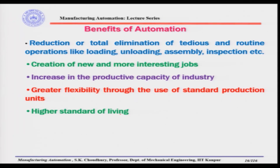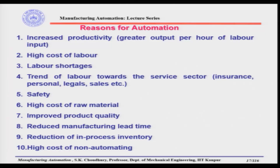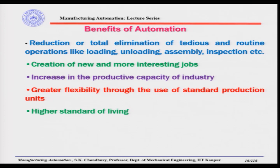Fifth, automation leads to a higher standard of living. If automation is used correctly, we can increase production rate, decrease time-consuming processes, increase profit, and when that profit is distributed, the overall standard of living becomes higher. Regarding reasons for automation: first, we need greater output per hour of labor input, meaning we must increase production rate — which will also decrease prices and raise the standard of living.